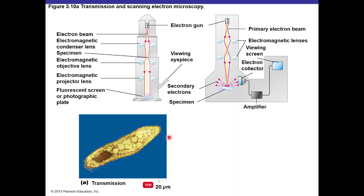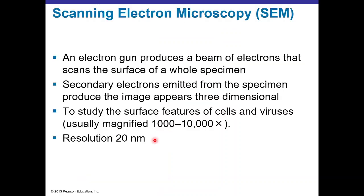In the transmission electron microscope, electrons are sent through an electromagnetic condenser lens directed at the specimen, then through objective lenses and projector lenses, onto a photographic film or fluorescent screen, viewed through eyepieces or a computer. Using TEM on paramecium at a scale of 20 micrometers reveals very fine detail of the specimen.